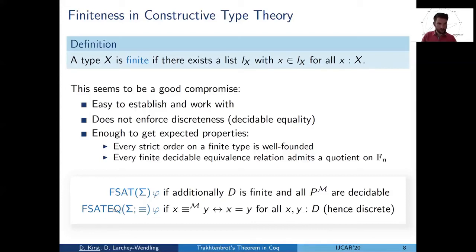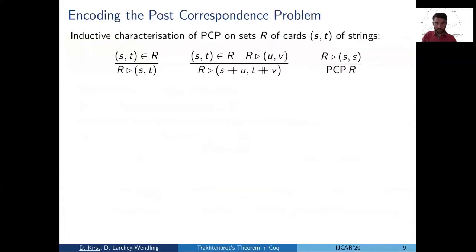For simplification, we also introduce finite satisfiability on a specific equality symbol. And here we require that the model interprets syntactic equality with real semantic equality.